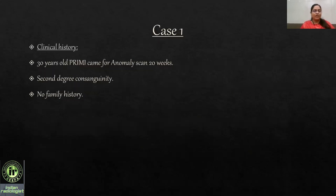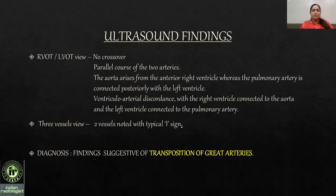Case 1: A 30-year-old primigravida came for an anomaly scan at 20 weeks. Second-degree consanguinity was present and no significant family history. On ultrasound, in the outflow tract views, there was no crossover and a parallel course of the two arteries was seen. The aorta was arising from the anterior right ventricle whereas the pulmonary artery was connected posteriorly to the left ventricle. Ventricular-arterial discordance was found with atrioventricular concordance. In the three-vessel trachea view, only two vessels were seen with a typical eye sign, consistent with transposition of great arteries.